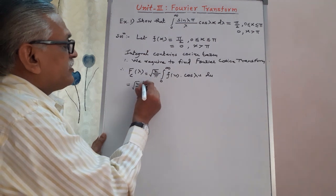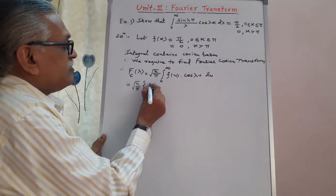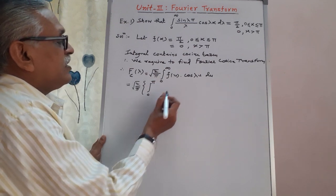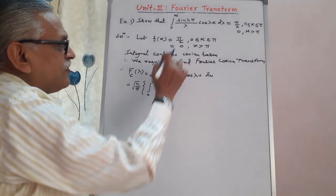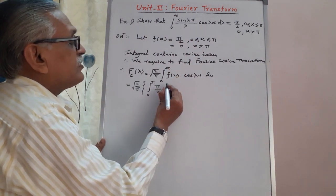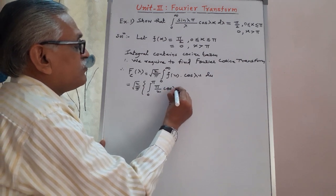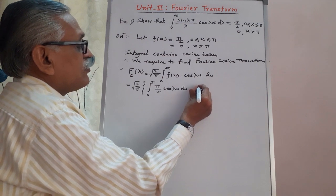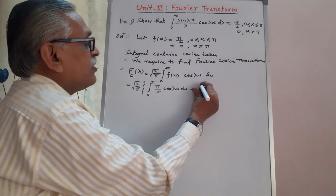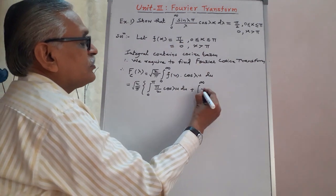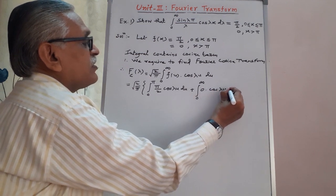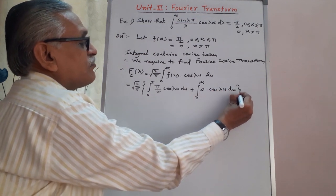This equals √(2/π) as it is, splitting the integral: from 0 to π the value of the function is π/2, therefore it is π/2 × cos(λu), and the remaining range π to infinity has function value 0, therefore it is 0 × cos(λu) du.